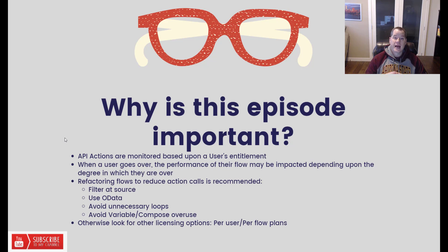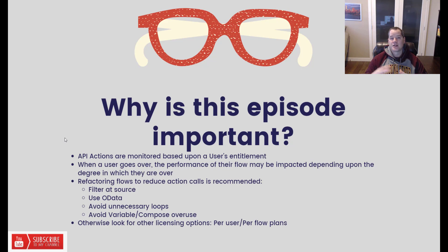If you exceed your entitlement, you might see throttling occur. Throttling essentially reduces the amount of throughput you have in order to protect the overall system and ensure that people don't squeeze too many executions out of their existing license entitlement.